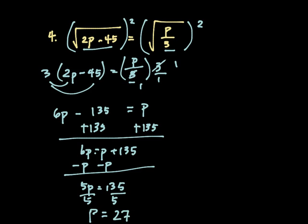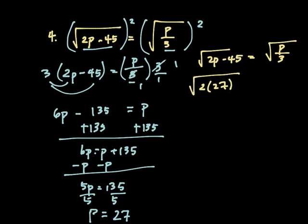Okay, let's go ahead and check that work. The original equation was 2p minus 45 equals square root of p divided by 3. I'm going to substitute 27 for p equals square root of 27 divided by 3.